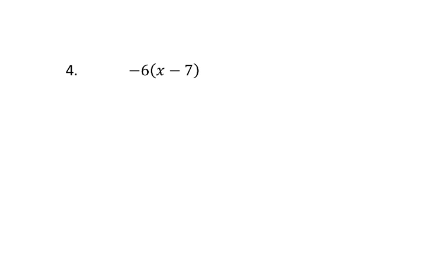The first thing I'm going to do is multiply negative 6 times x. Negative 6 times x is negative 6x. So I just went vertically down on that first part of the problem.